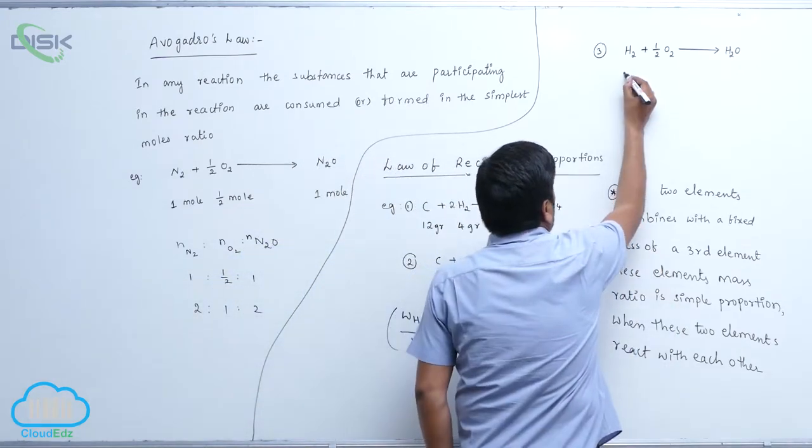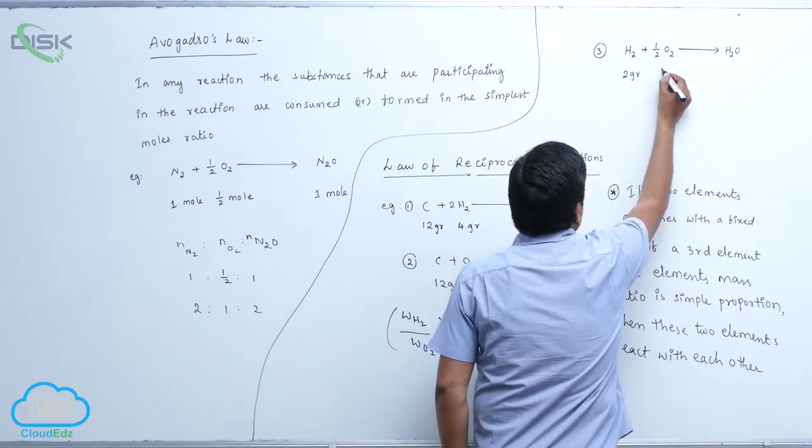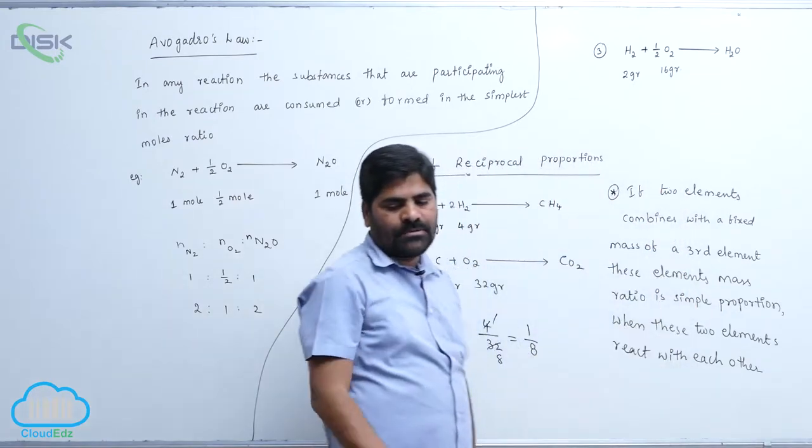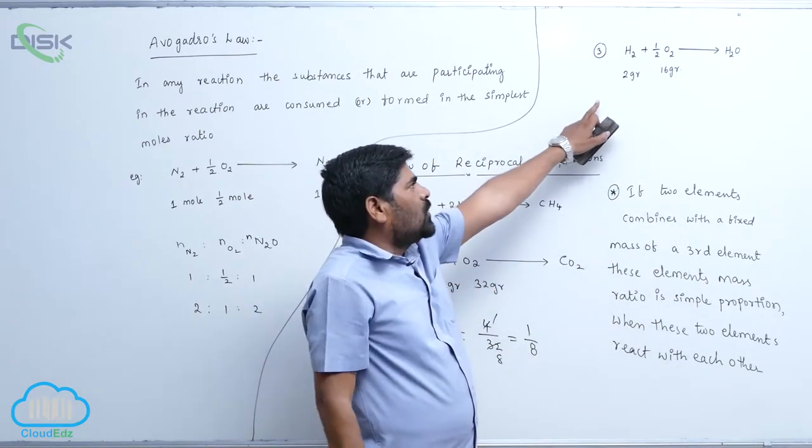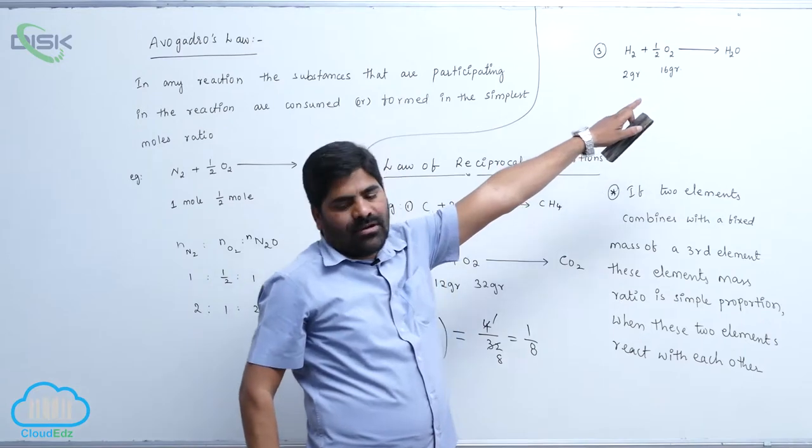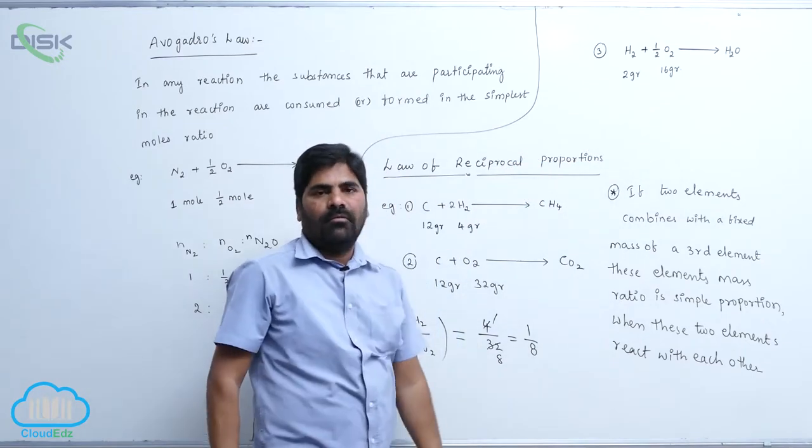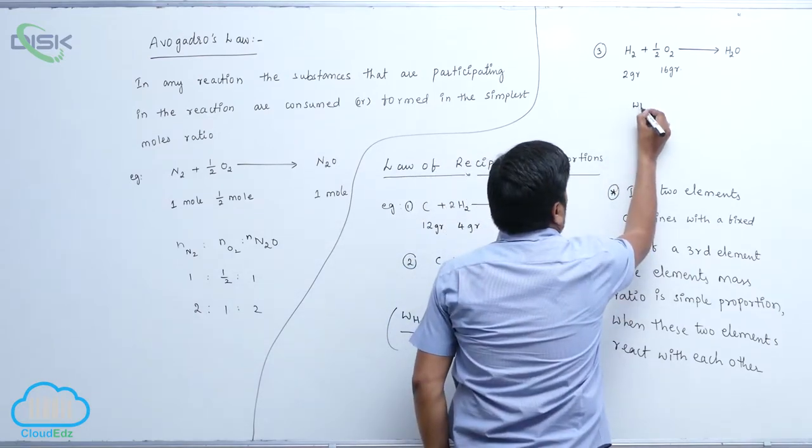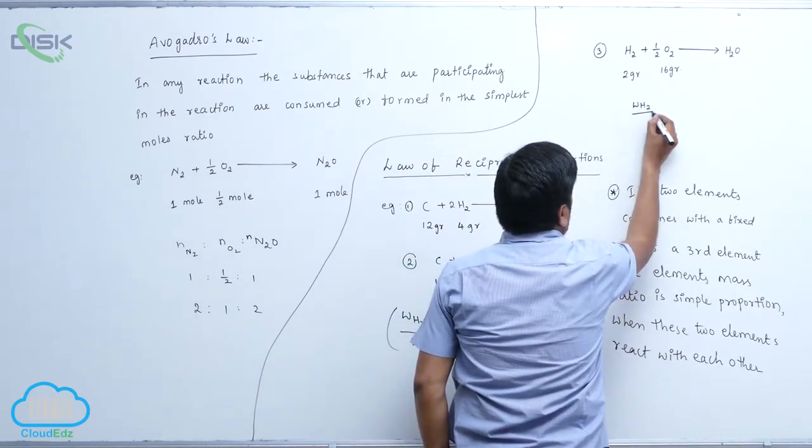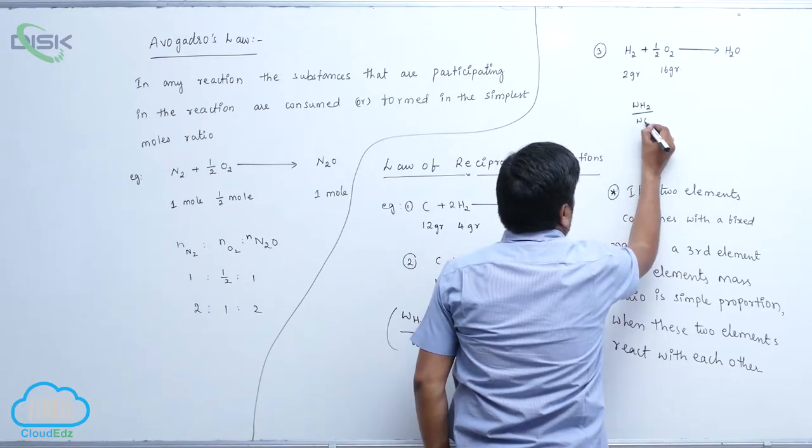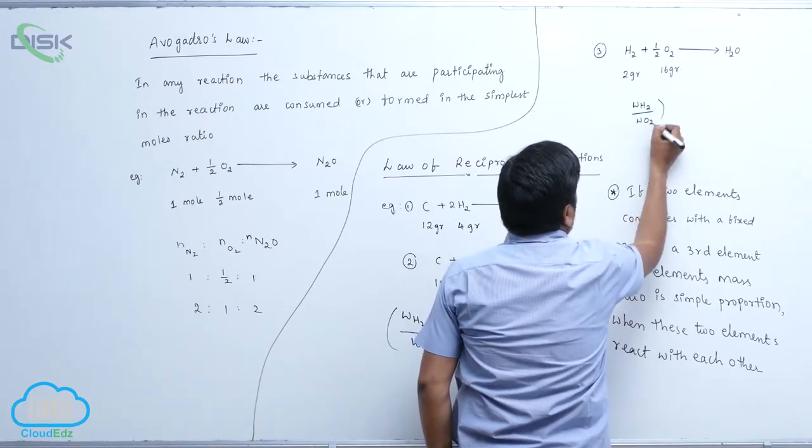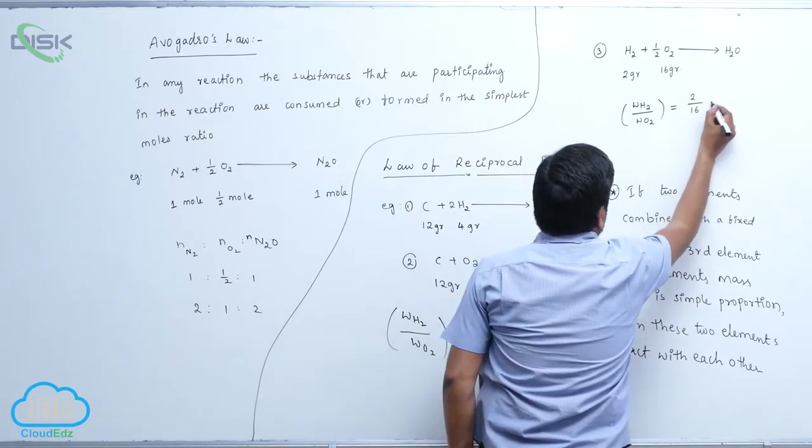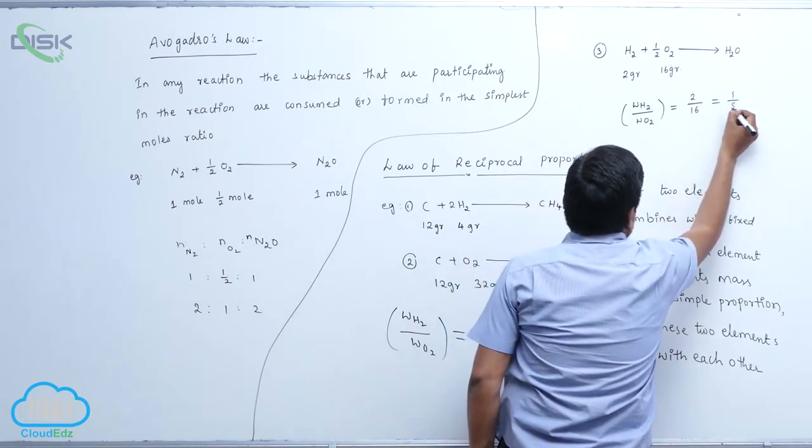2 grams of oxygen here is 16 grams. How many grams? 2 grams of hydrogen, 16 grams of oxygen is involved to form this one. Here weight of H2 by weight of O2 equals to 2 by 16, so it equals to 1 by 8.